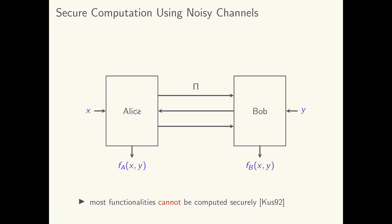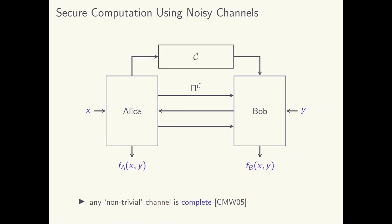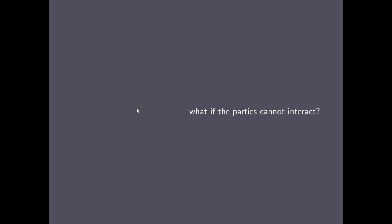Another well studied problem is using noisy channels to facilitate secure two-party computation. It is well known that only a limited class of functionalities can be computed by two parties interacting over a clear channel — this was shown by Kushlevitz in 1992. But when the parties have access to a non-trivial channel, they can compute every functionality with statistical security, in both the semi-honest and the malicious setting. Here, a non-trivial channel means a channel that is neither a clear channel nor a completely noisy channel where the output is independent of the input.